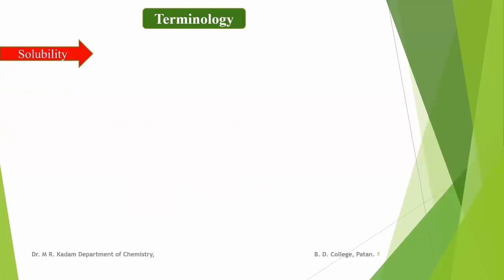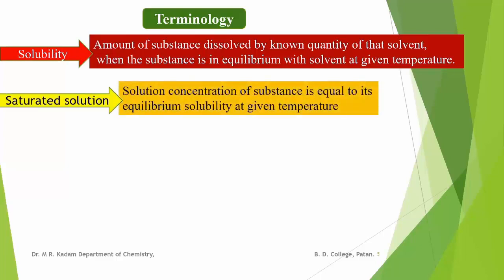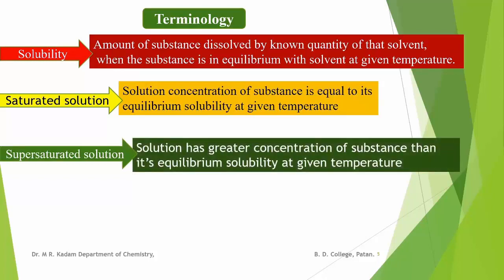The next important term is solubility. It is defined as the amount of the substance dissolved by a known quantity of that solute when the substance is in equilibrium state at a given temperature. The saturated solution is the solution having concentration of the substance equal to its equilibrium solubility at a given temperature. While supersaturated solution is the solution having greater concentration of the substance than its equilibrium solubility at a given temperature. This supersaturated solution is either unstable or metastable.